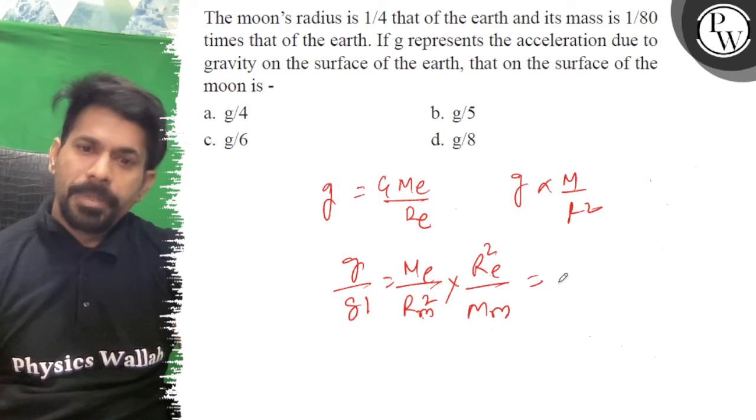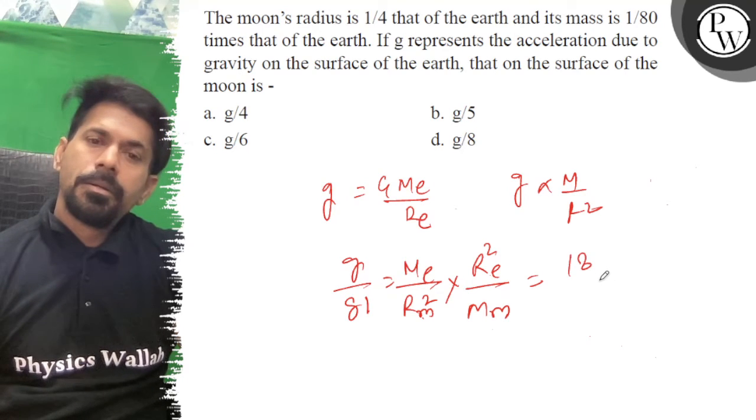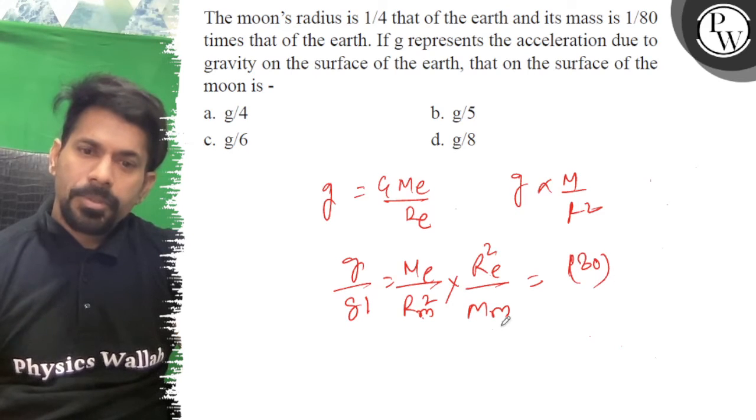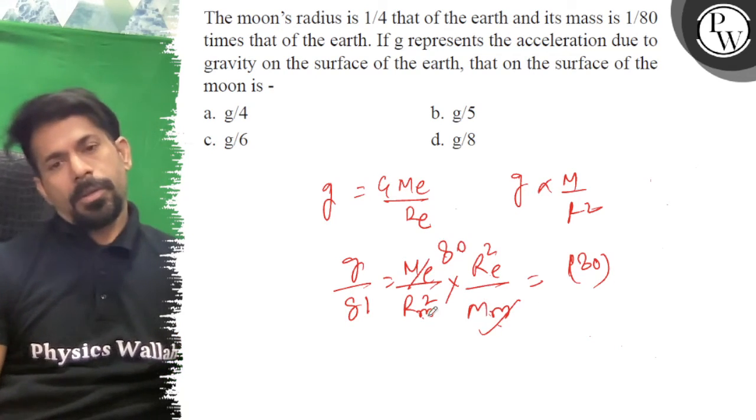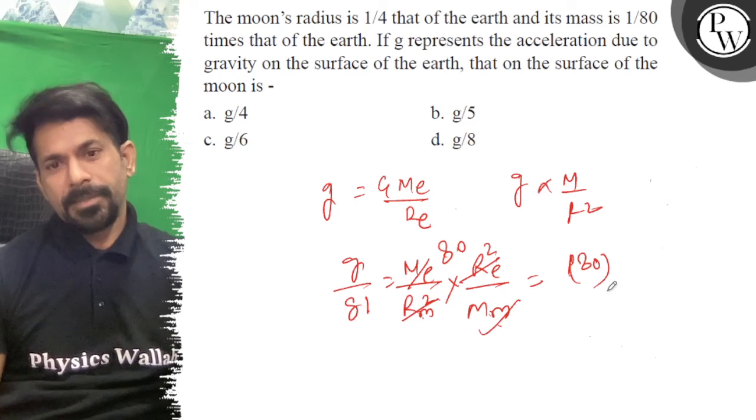And moon's mass is 1/80, so this will be 80 times, and this will be the radius of moon. Moon's radius is 1/4th of the earth's radius, so this will be 1/16 times.